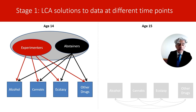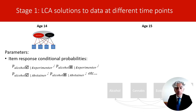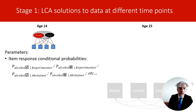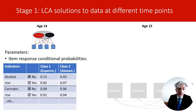In this example, I identified two classes: one of substance use experimenters and one of substance use abstainers. Latent class models provide these parameters: firstly, the item response conditional probabilities — that is, the probability (indicated by P) of reporting a type of behavior on one indicator, for example alcohol use, conditional on latent class membership. For example, the probability of reporting alcohol use for people in the experimenter class. In the outputs, these probabilities are reported in tables showing the probabilities of answering different ways to the different items for people in different classes.